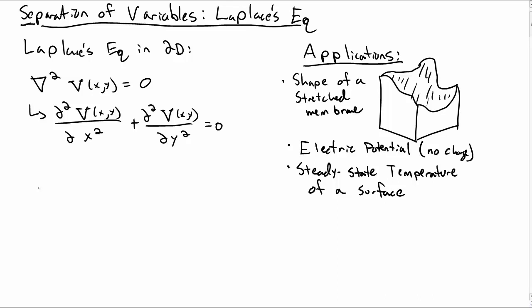Let's consider the application of separation of variables to Laplace's equation. Laplace's equation in two dimensions is the second derivative of some function v with respect to x squared plus the second derivative of v with respect to y squared equals zero. This has lots of applications like the shape of a stretched membrane on a frame, the electric potential in a region where there's no charge, or the steady state temperature of a surface.